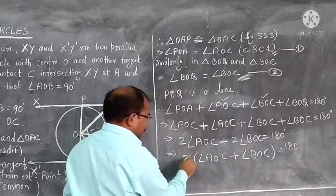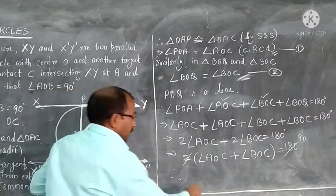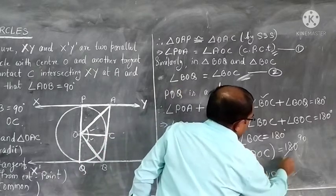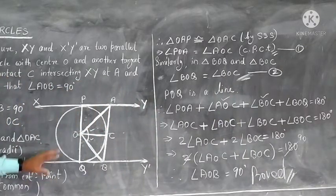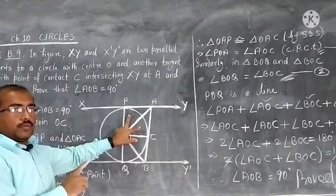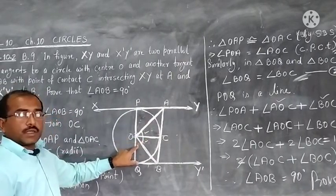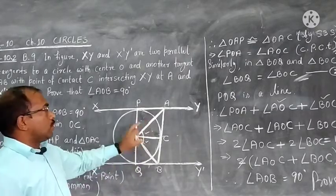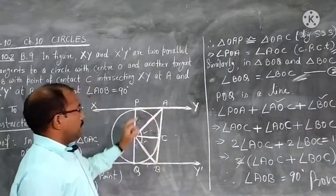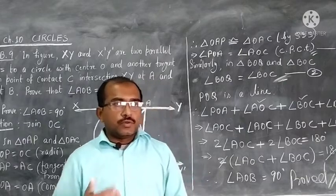We get angle AOB equals 90 degrees — it was there to be proved. It is a very simple but very important question for your board exam. We used congruency after joining OC, proved the first two triangles congruent, got corresponding equal angles, repeated the same for the other pair, then used the fact that POQ is a straight line to get the four angles summing to 180 degrees, and finally obtained angle AOB equals 90 degrees. Practice once or twice and you will learn it nicely. See you with new solutions in the next video.